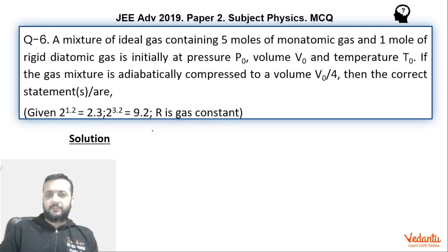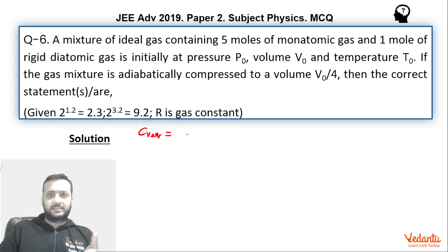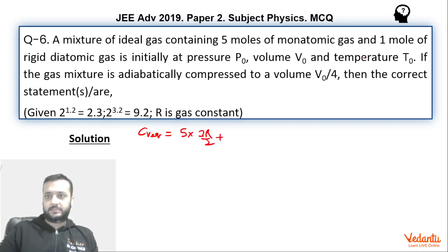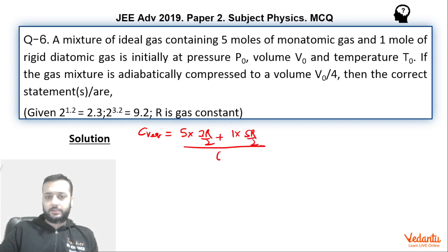First we will find the Cv equivalent of this mixture. Since it's a mixture, we find the weighted average of the moles. So we can say: 5 × Cv of monatomic (which is 3R/2) plus 1 × Cv of diatomic (which is 5R/2), divided by n1 + n2 = 6. So that gives us 15 + 5 = 20, then 20/2 = 10, and 10/6 = 5R/3.